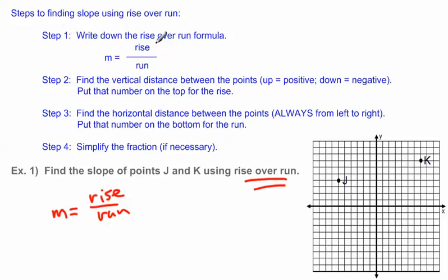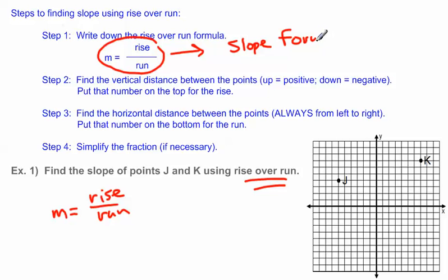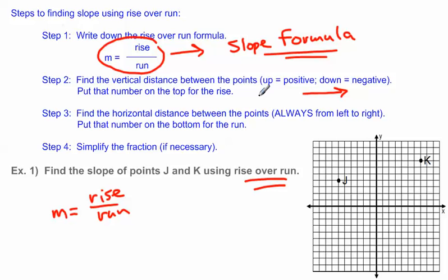Keep in mind there is an alternative way of finding slope using the slope formula — I've got a separate video on that if you want to watch it. But this problem specifically asks for rise over run, so I'm going to solve it that way. Step two says find the vertical distance between the points. Up is positive and down is negative, and you always want to go from left to right when looking at two points. Put that number on top for the rise.